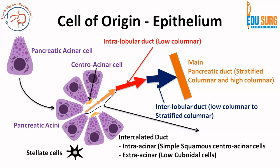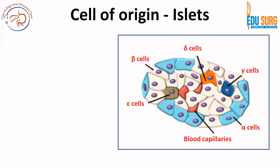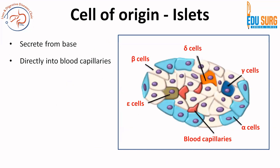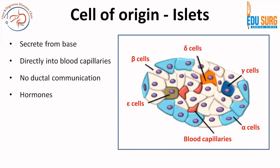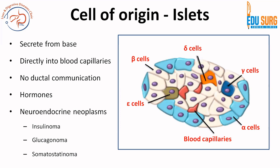The stellate cells are present outside the acini. Coming to cell of origin — the islets: we know that the islet cells secrete from the base directly into blood capillaries, whereas acinar cells secrete from the apices into the duct. So islets are not in communication with ducts, and what they release are the hormones we have already seen. When the cell of origin is the islet cell, you get neuroendocrine neoplasm. So it is clear that with the islet as the cell of origin, the neoplasm will be a neuroendocrine neoplasm — insulinoma from beta cells, glucagonoma from alpha cells, somatostatinoma from delta cells, and so on.